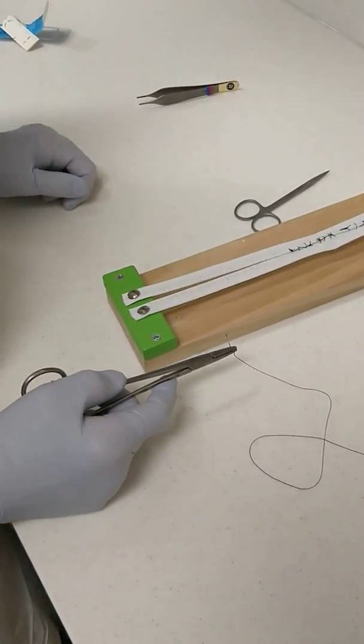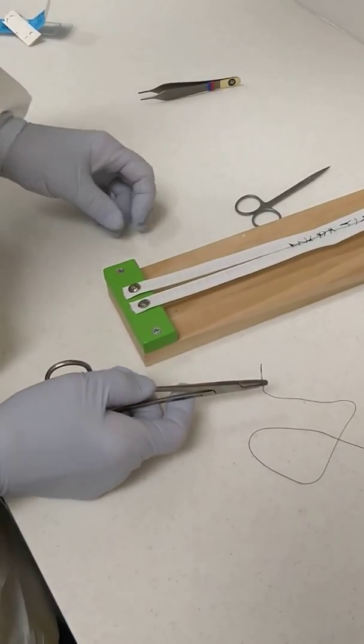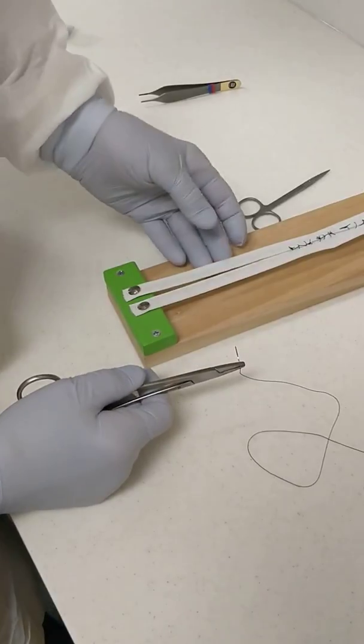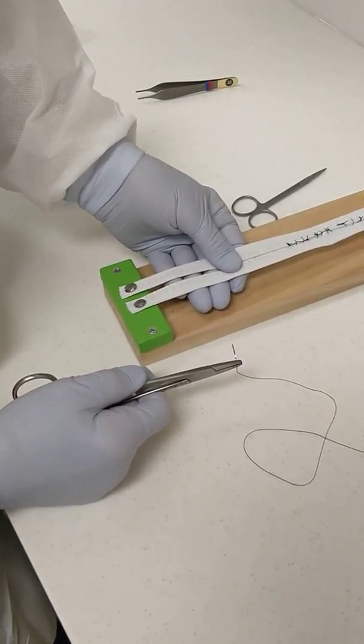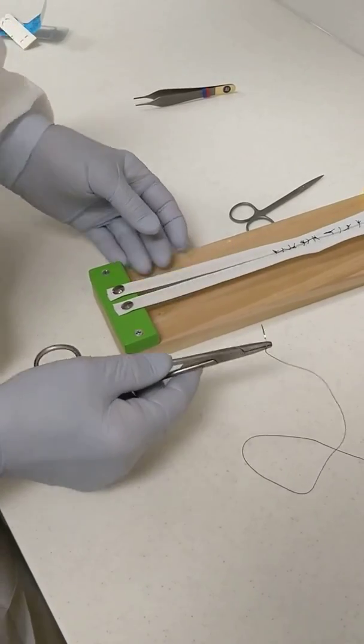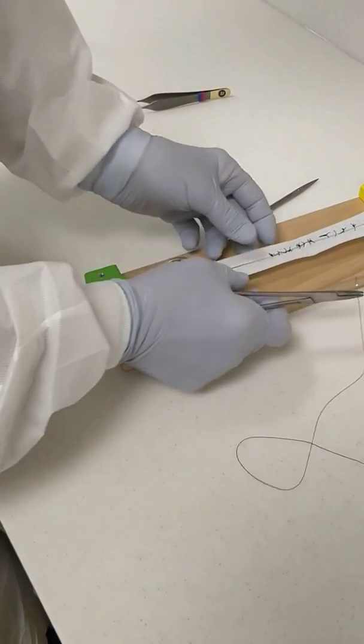There are some additional sutures that you use from time to time. There's a vertical mattress suture, a horizontal mattress suture, and a figure of eight suture. And I'll run through those quickly.